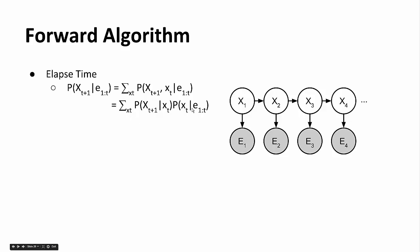Looking at this equation, the second factor — p of x sub t given e1 through t — is just our belief at time t. The first factor — p of x sub t plus 1 given x sub t — is our transition distribution, which we are given. So we can easily compute the new expression p of x sub t plus 1 given e1 through t. Written concisely: b prime of x sub t plus 1 is the sum over x sub t of the transition distribution times b of x sub t. We call it b prime because it does not yet include the evidence from time t plus 1.